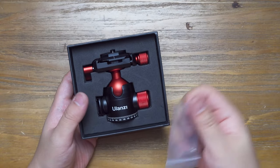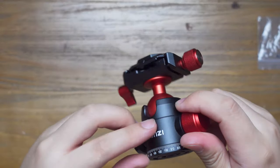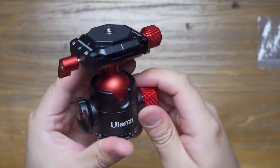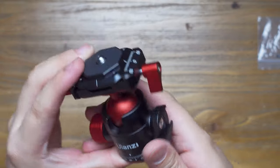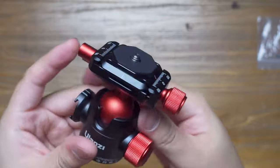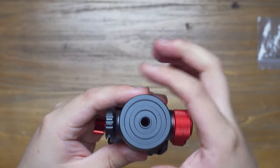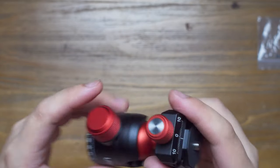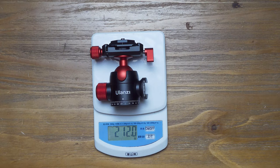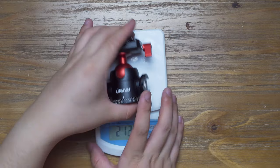What differentiates this ball head from other products is that it has a built-in cold shoe mount on the side. The diameter of the ball is around 30 millimeters, and the diameter of the base is around 38 millimeters. It's very lightweight, weighing around 212 grams.